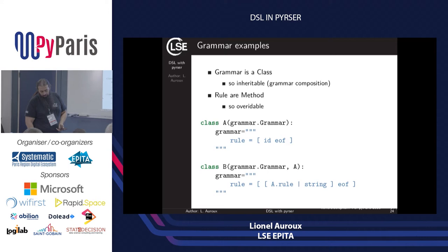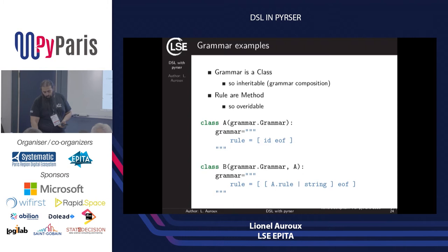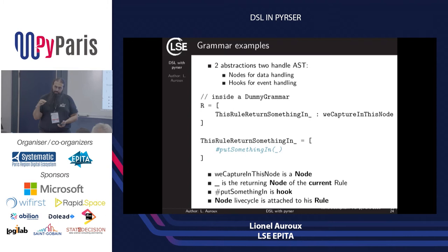Grammar is a class and a rule is a method, so everything is overrideable and you can do something called grammar composition: create a first grammar, create another grammar, and mix them into a third grammar. For handling the AST, Pyrser relies on just two concepts: nodes and hooks — nodes for data handling and hooks for event handling. The main idea is to separate the Python code from the grammar description.